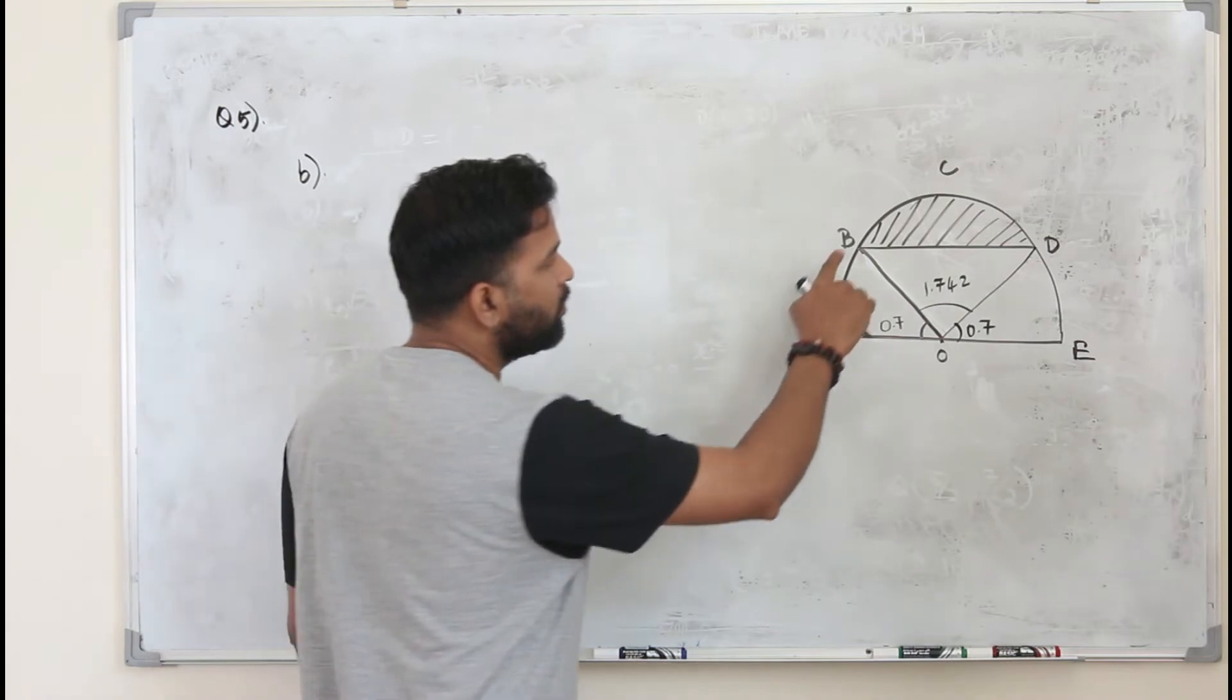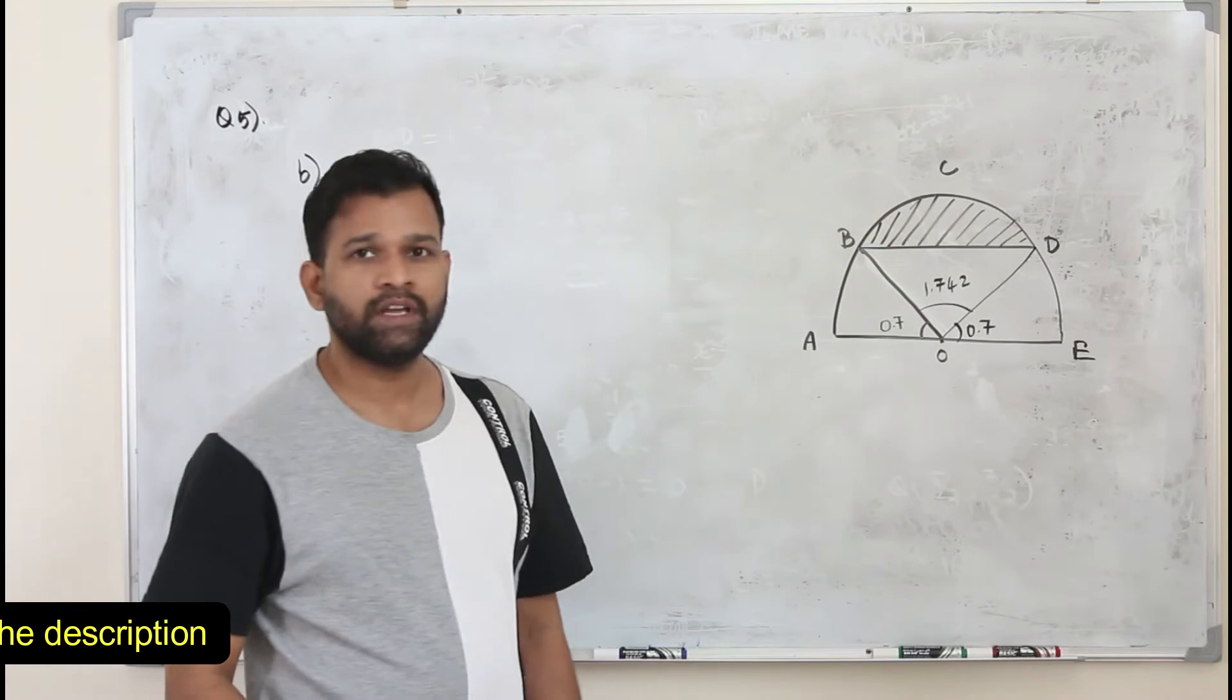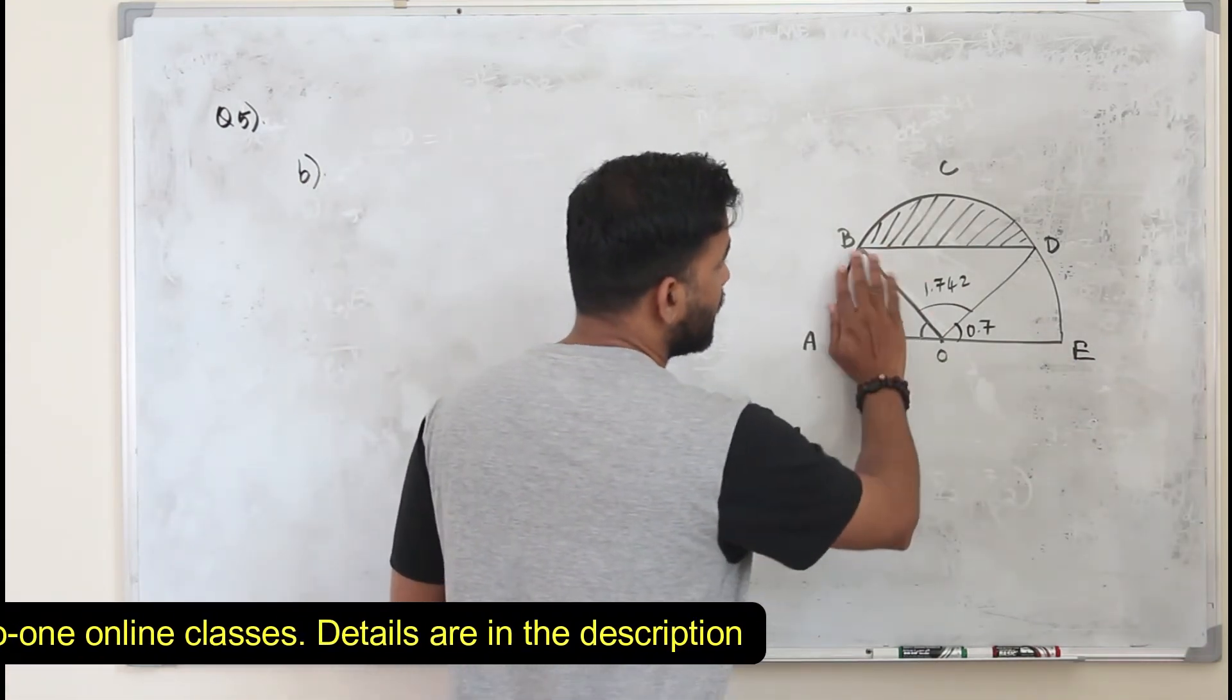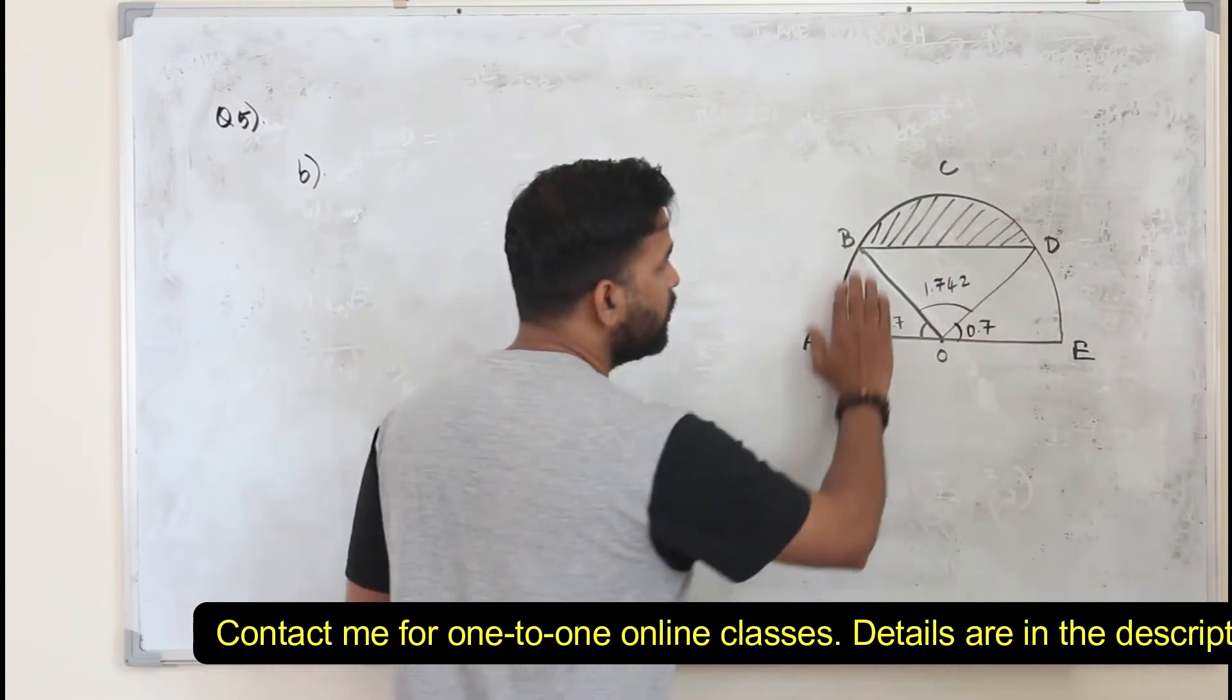Here in part B, they want you to find the shaded region, area of the shaded region. There are several ways you can do it. You can find the area of the semicircle and then subtract this area, so you get the shaded area.